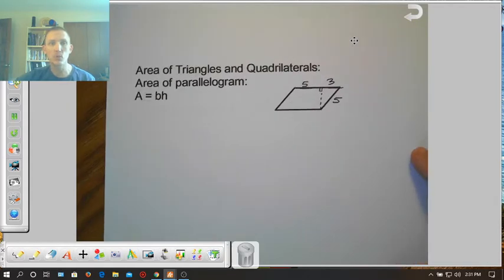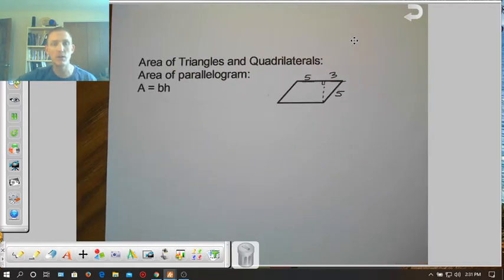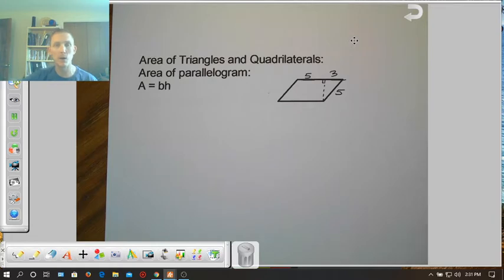So the first thing we're going to talk about is the area of a parallelogram. Now a parallelogram is a quadrilateral with two sets of parallel lines, so you'll see parallel lines here and here, and then parallel lines across the top and the bottom. A rectangle is going to be your most basic of the parallelograms. Now we already know that the area of a parallelogram is going to be base times height. Well, if we look here, the most important thing to recognize about all of our shapes is when we talk about base and height, we need this right angle right here. So this right angle is going to be crucial.